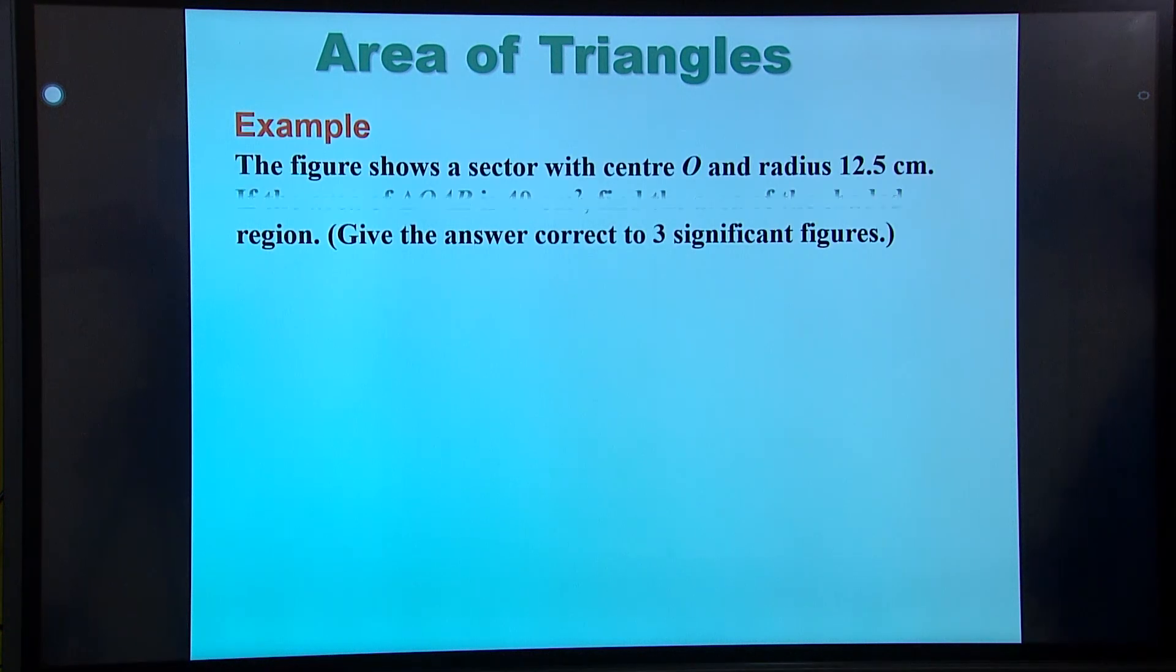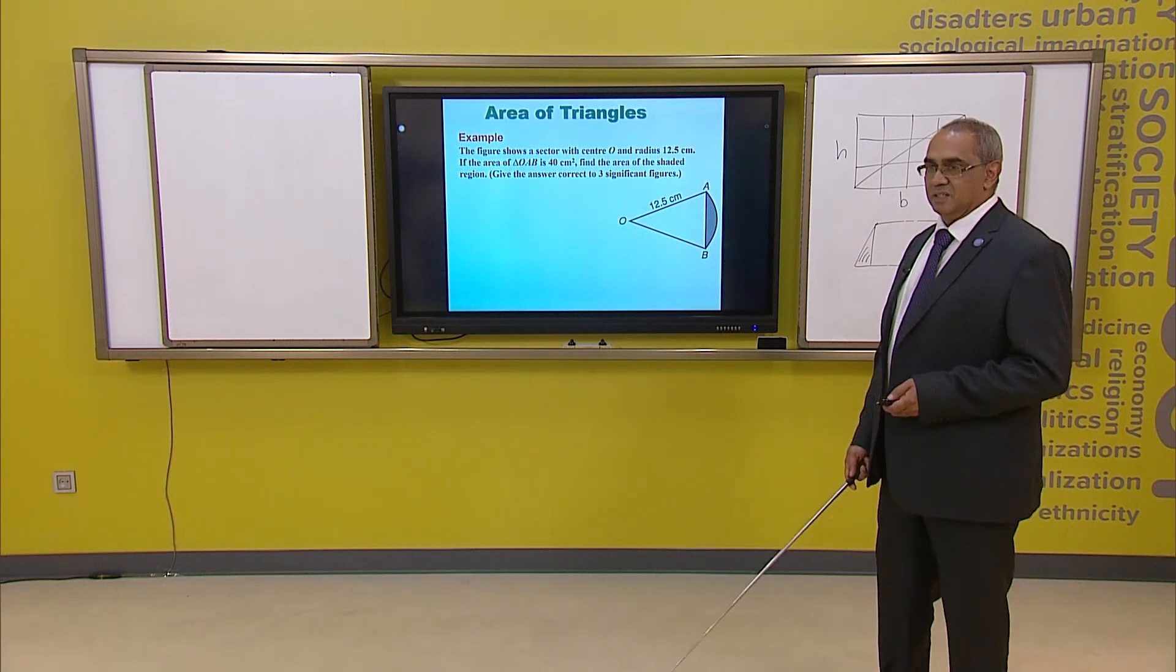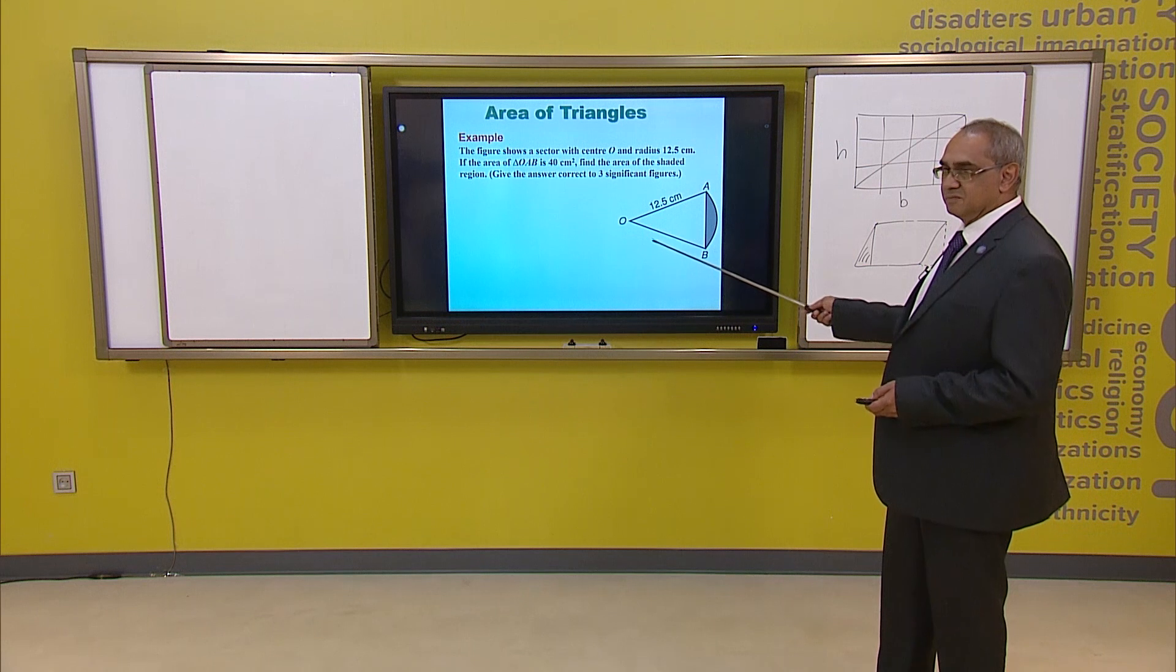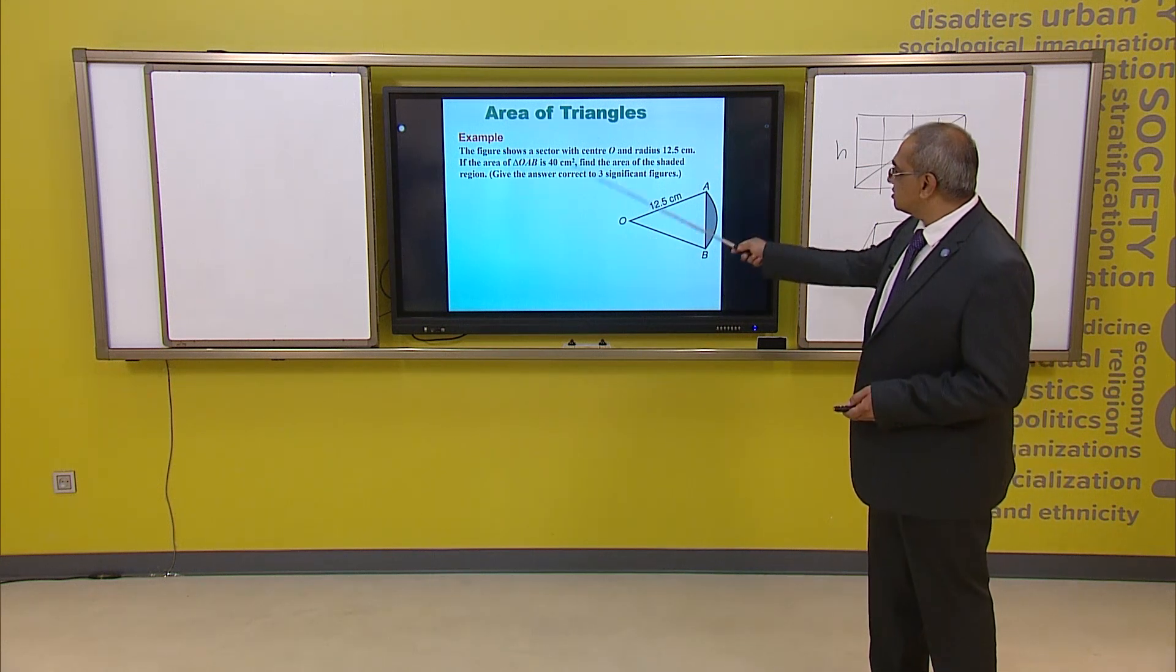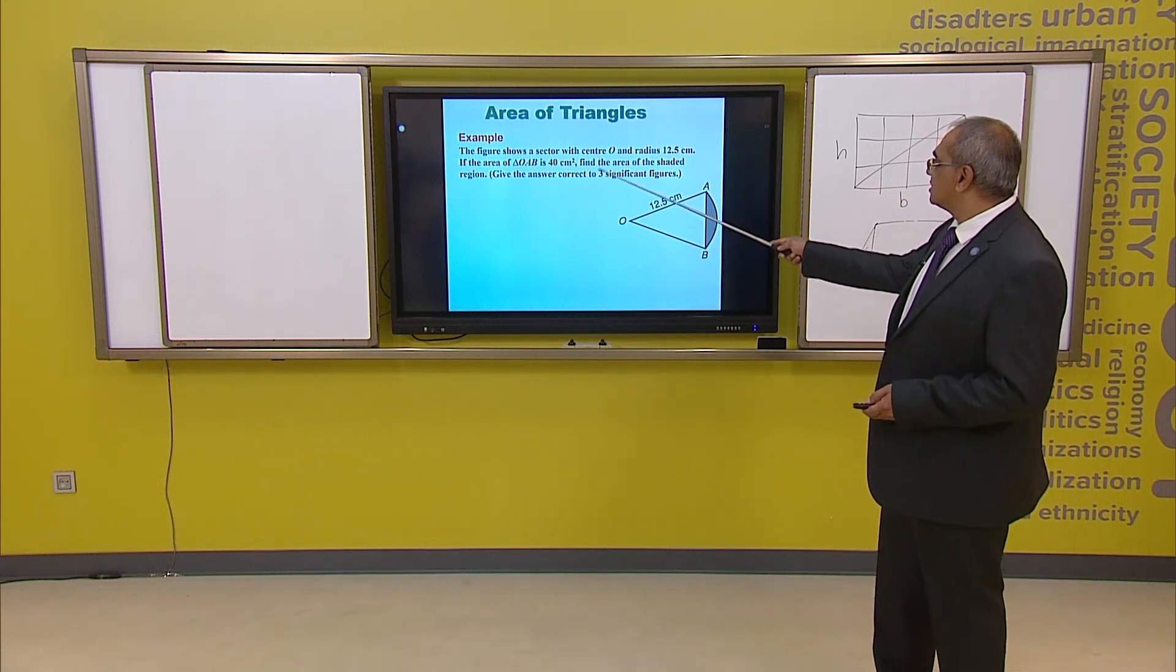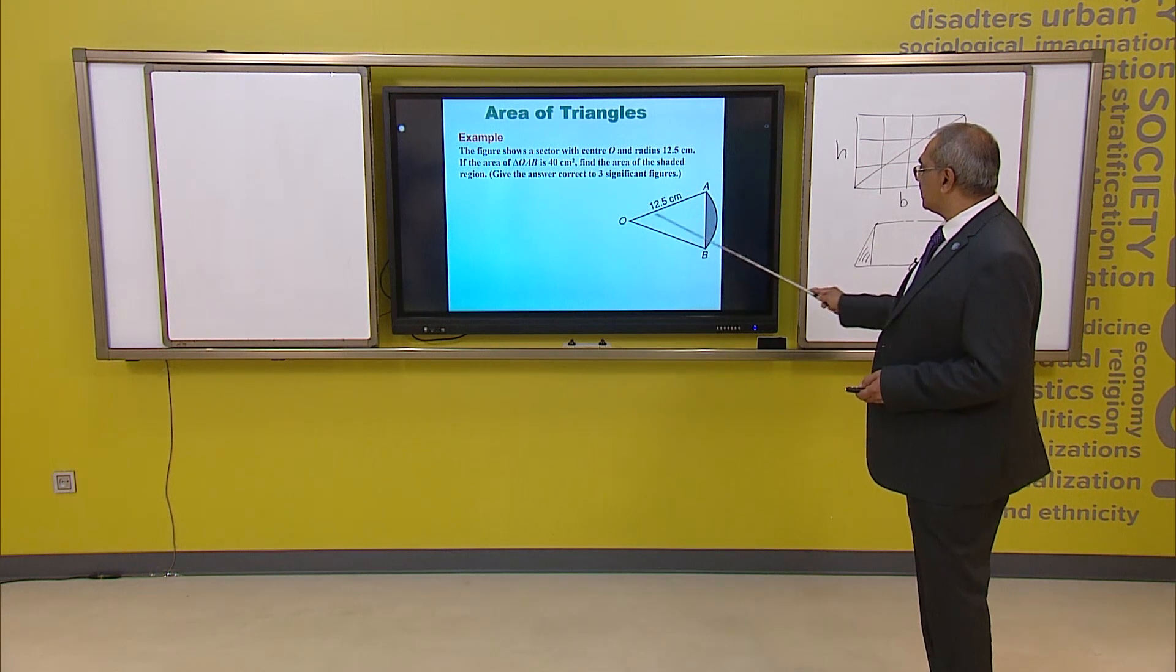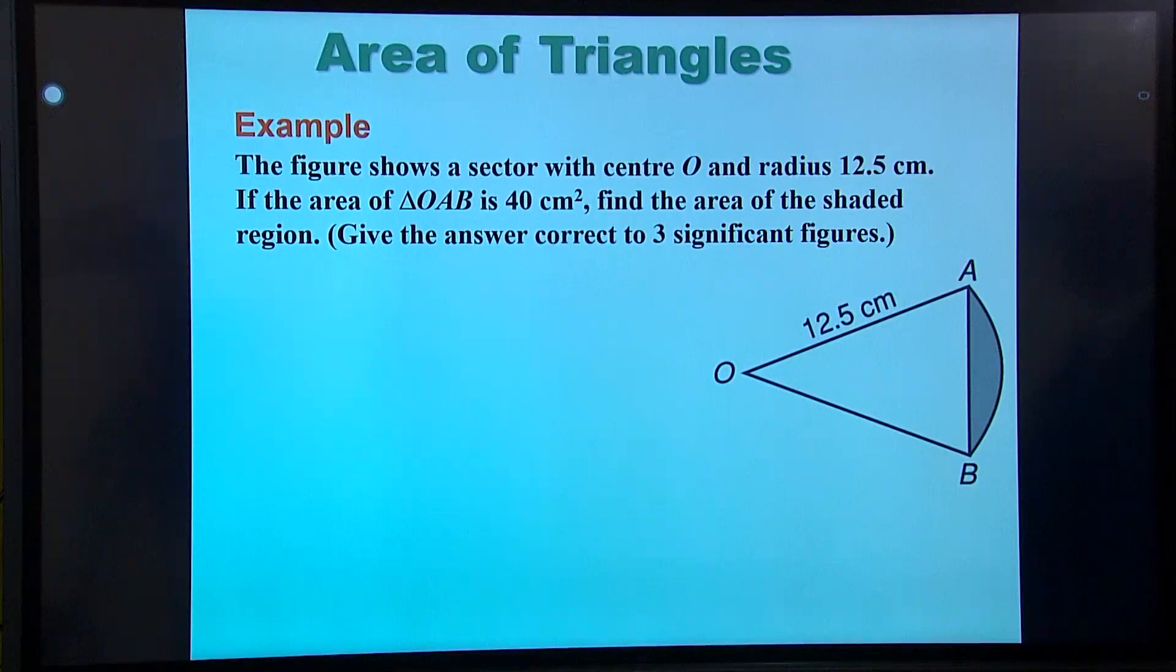Let's just have a look at another example. There's a little bit more complicated. We have what is called a sector. And this is part of a big circle. So the area of that OAB, the triangle, is 40. Find the area of the shaded region.